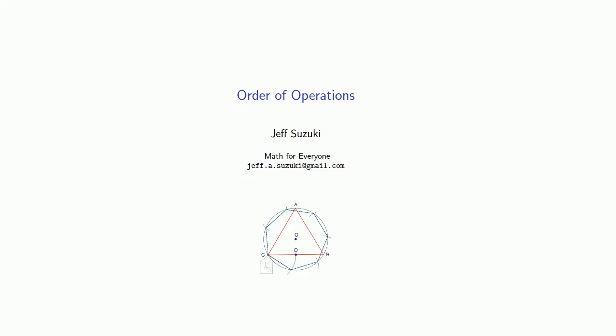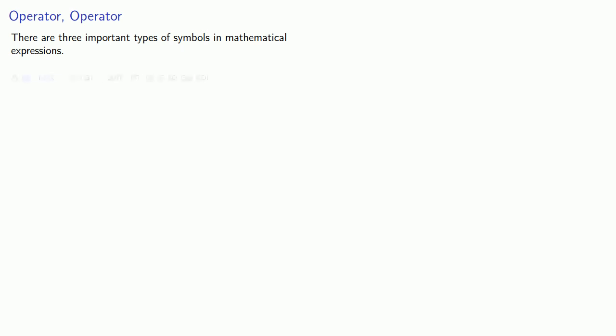An important idea is the concept of the order of operations. Let's introduce some terminology. There are three important types of symbols in mathematical expressions. An operator indicates something is to be done — things like plus, minus, divide, and times.